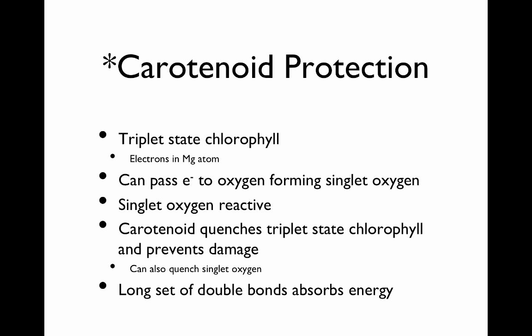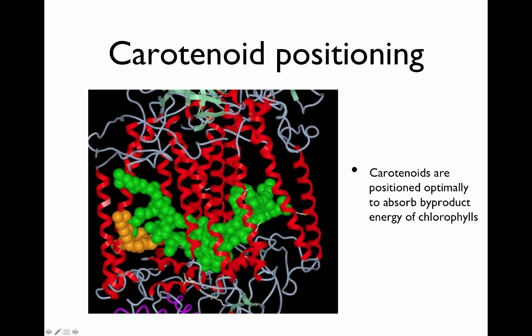Carotenoids are very good at quenching the triplet state of chlorophyll. If it gets into that state, the energy can be transferred over to carotenoids and it goes back and forth on those double bonds — it resonates. That decreases the energy, and the electron can be passed back to the chlorophyll once it's been reduced. If you look at the special pair in a reaction complex and where the carotenoid is positioned, it's situated just for this purpose: to absorb that triplet state if it happens in either chlorophyll.